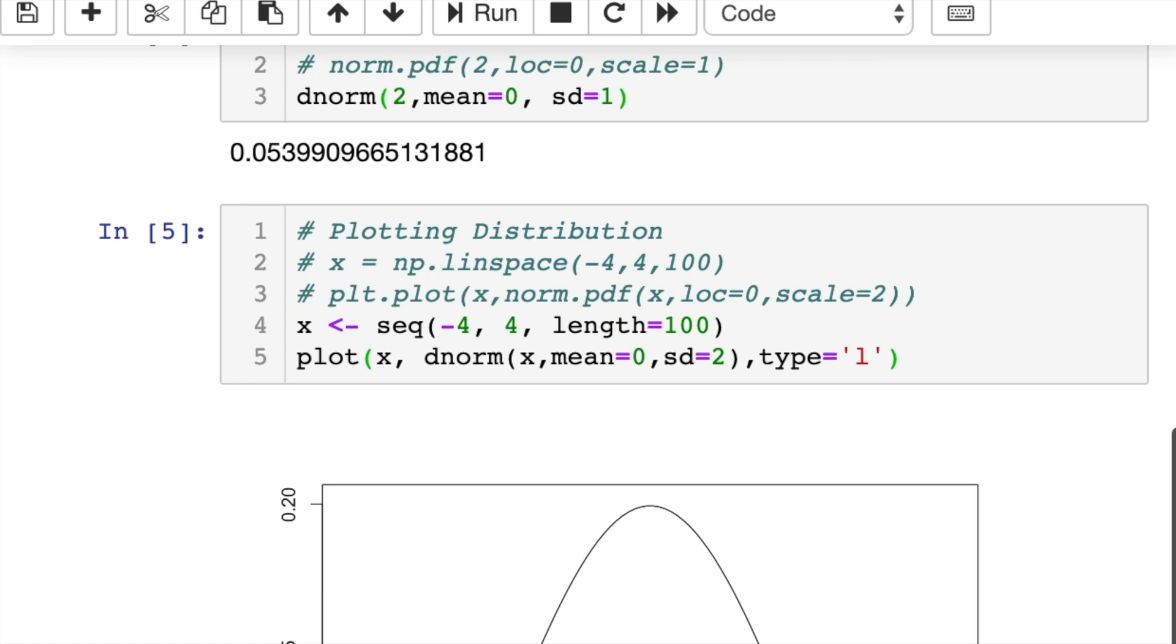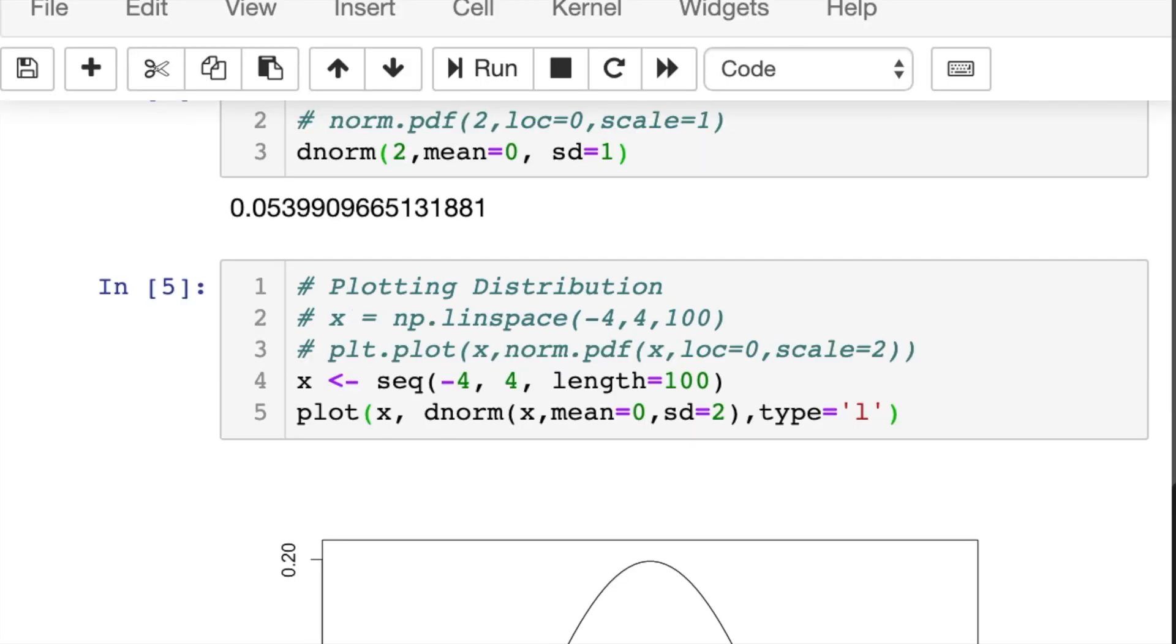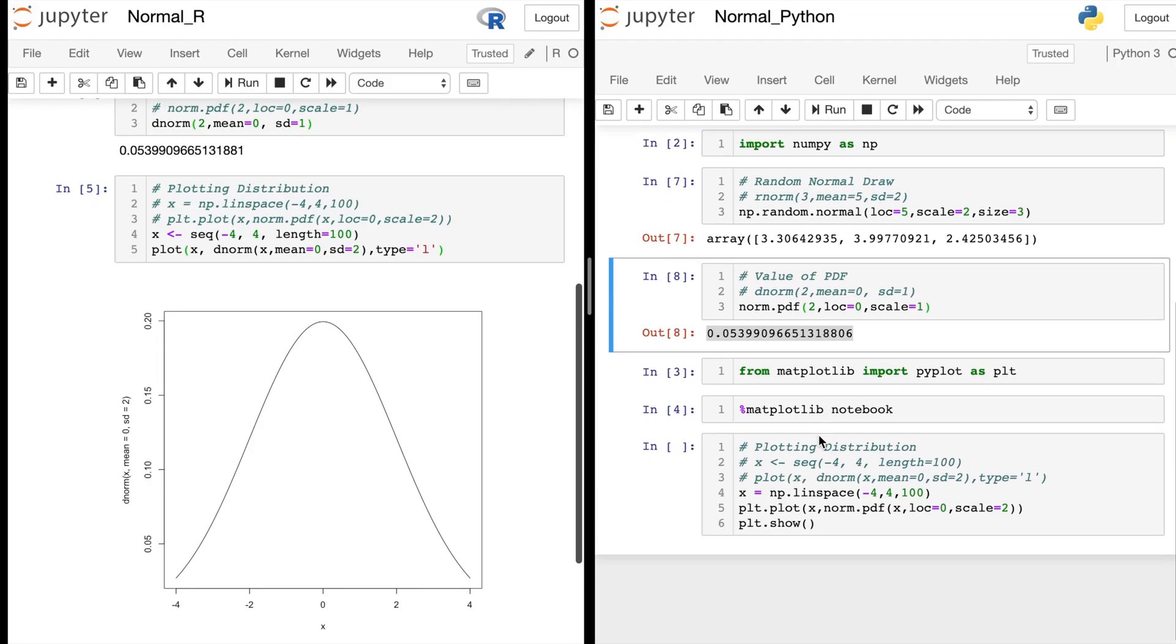Now, take a look at those comments we have. For the Python code, we have x equals np.linspace negative 4 to 4 with a length of 100 as well. So that's doing the same thing as our sequence in R. And then we have plt.plot, which comes from the matplotlib library. And it works the exact same. You just give it x for the domain and then the function norm.pdf of x with the loc equals 0 and scale equal to 2. We don't have to specify that this is a line. So let's go ahead and run that in Python.